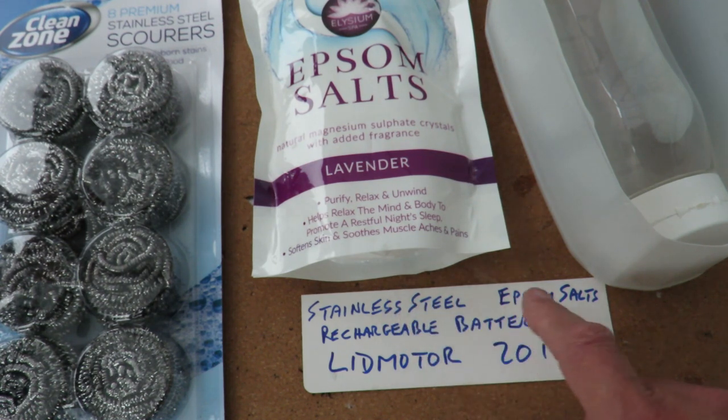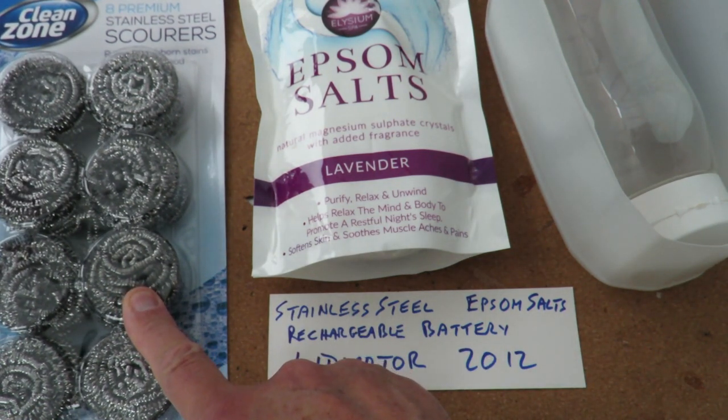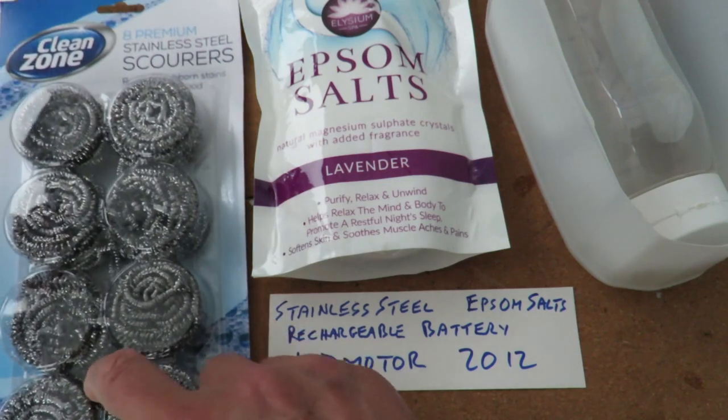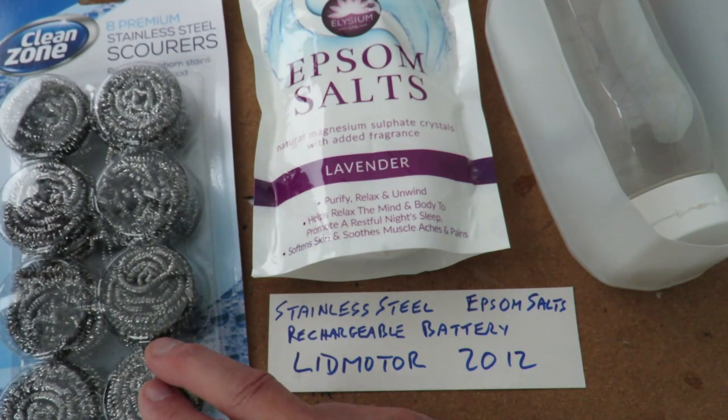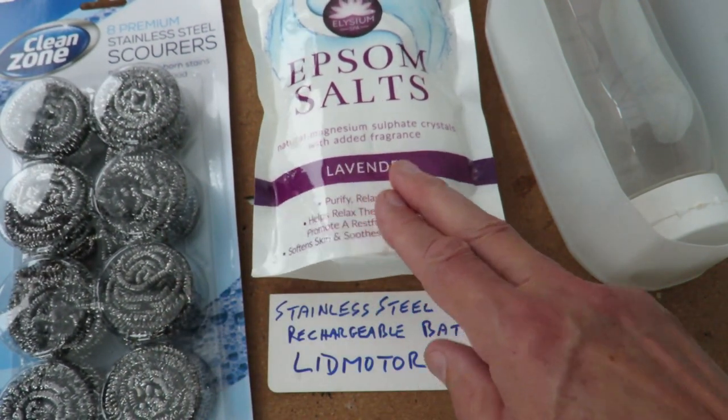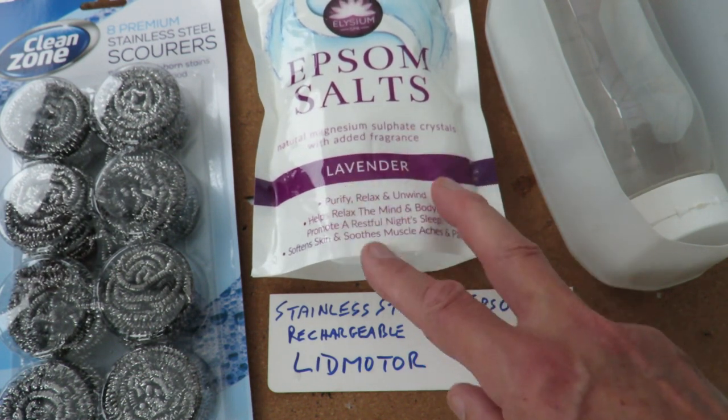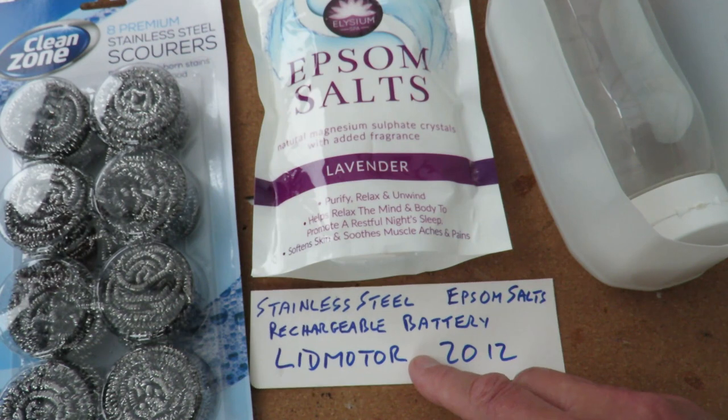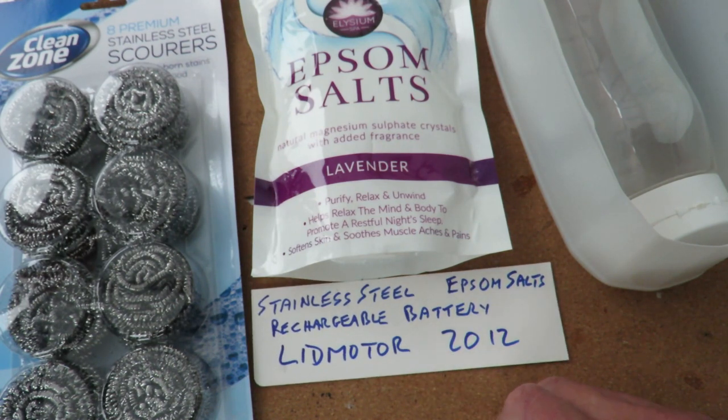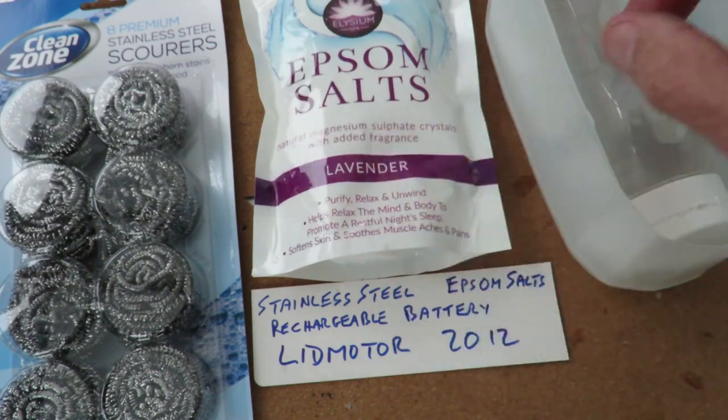I got some stainless steel scourers, cheap ones from Poundland, so there's a good chance they're not really stainless steel, but we'll try them. I've also got some Epsom salts, the sort you put in the bath to make it smell nice, so they're going to have impurities in them. I think Lidmotor used the pharmaceutical version, the sort of thing you put in your cup of tea, not the bath time ones.